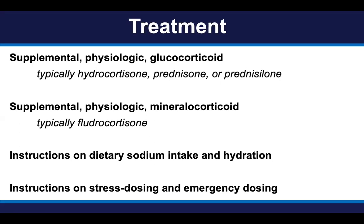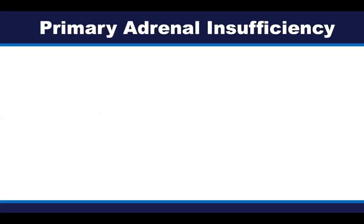For treatment of primary adrenal insufficiency, all patients will require supplemental physiologic glucocorticoid dosing — including hydrocortisone, prednisone, or prednisolone. Most patients will also require supplemental mineralocorticoid dosing, typically fludrocortisone. They will require teaching on dietary sodium intake and hydration, particularly on hot days when we sweat. Every patient with any type of adrenal insufficiency should receive instructions on what to do when their body is stressed, when they are ill, and when emergency dosing is needed. These topics will be covered in detail in subsequent videos.